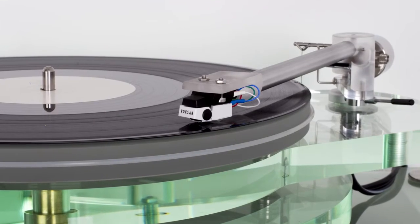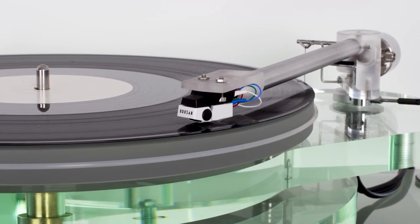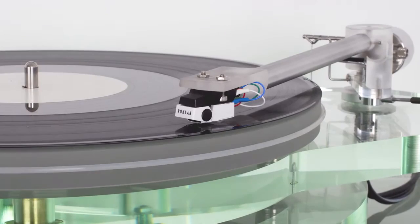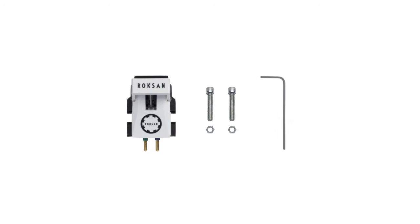In this video, we'll show you how to install the Roxanne Chorus II cartridge to a tonearm. To start, you'll need the cartridge, the provided nuts and bolts, and a 2mm Allen key.